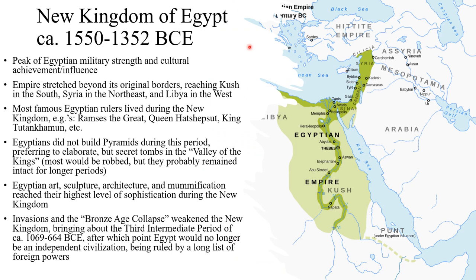The New Kingdom of Egypt, from circa 1550 to 1352 BCE, was the peak of Egyptian military strength and cultural achievement. The empire stretched beyond its original borders, reaching Kush in the south, Syria in the northeast, and Libya in the west. Some famous Egyptian rulers of the New Kingdom were Ramses the Great, Queen Hatshepsut, and King Tutankhamun, also known as King Tut.